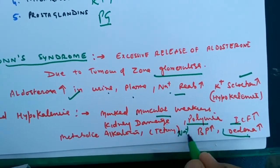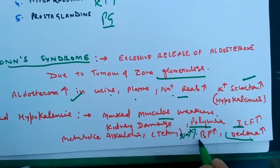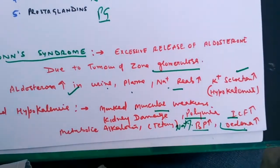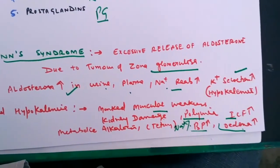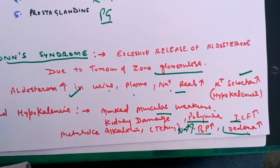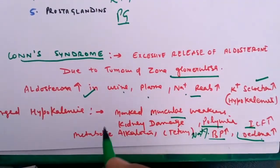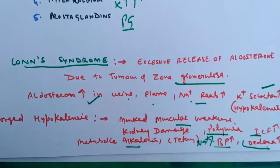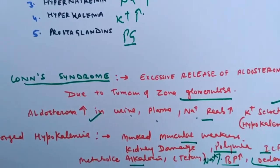The increased sodium level in the blood causes a rise in blood pressure — that is hypertension. Metabolic alkalosis is also increased in this condition.